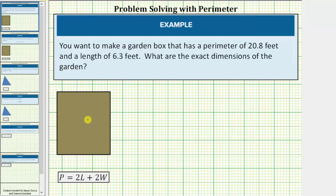So if this is the garden, we know the perimeter or distance around the outside is 20.8 feet. And the garden has a length of 6.3 feet. So if this is the length, we can label this 6.3 feet.